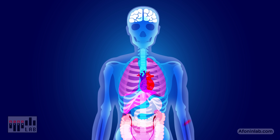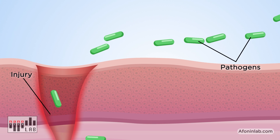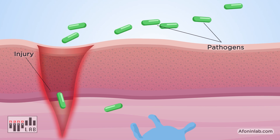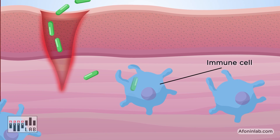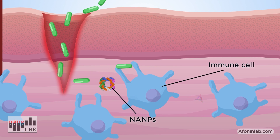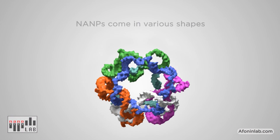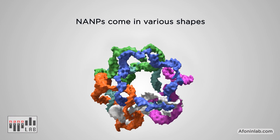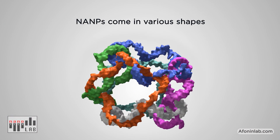The innate immune system is the human body's first line of defence against pathogens. Our research focuses on nucleic acid nanoparticles, called NAMPs. NAMPs can be assembled into various shapes, such as cubes, rings or fibres.